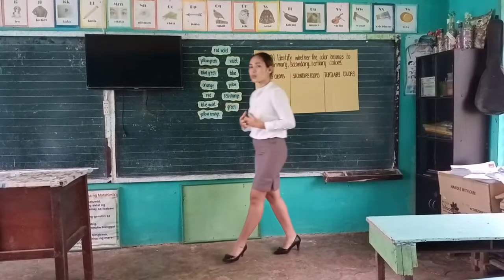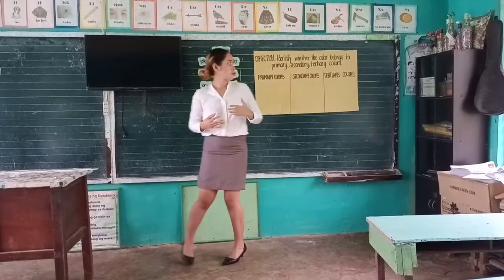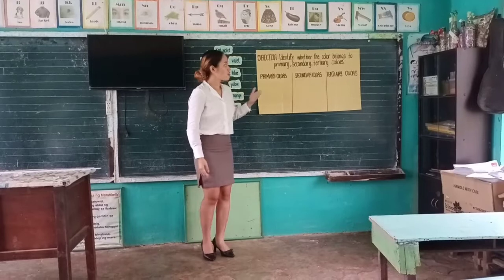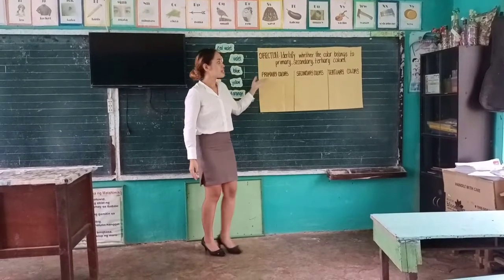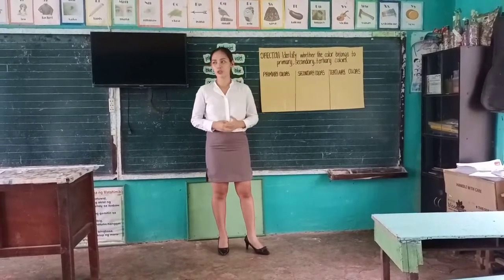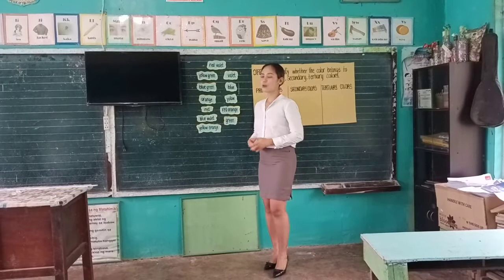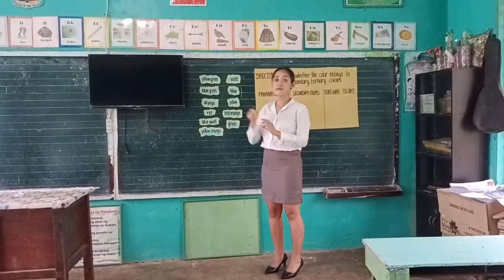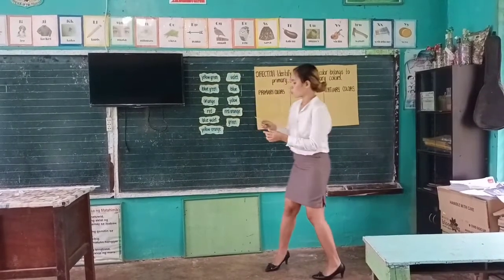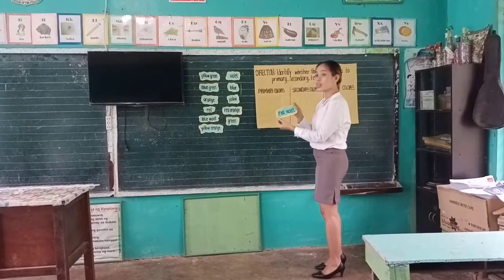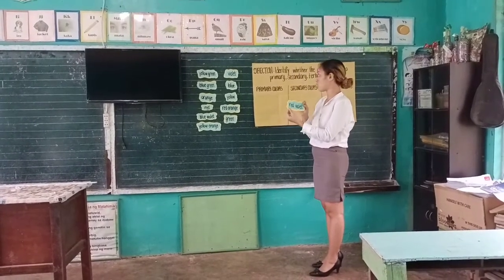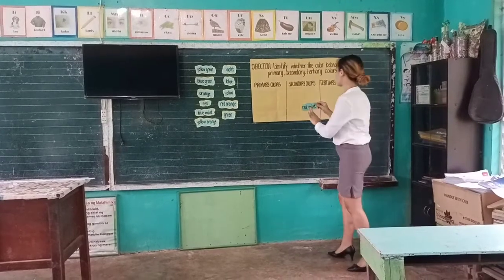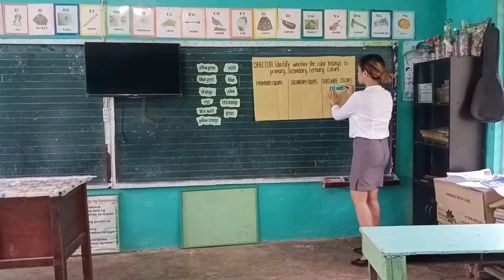So now, what we are going to do is to put these colors and identify whether the color belongs to primary, secondary, or tertiary colors. The first color that we have is red-violet. So, where do you think this red-violet belongs? Okay, so this belongs to tertiary colors.